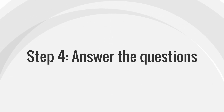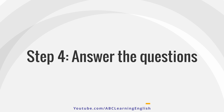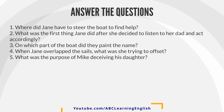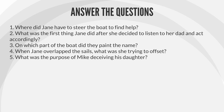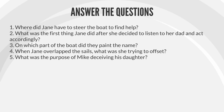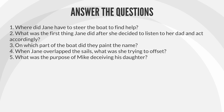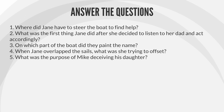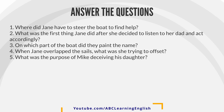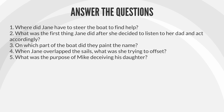Step 4: Answer the questions. 1. Where did Jane have to steer the boat to find help? 2. What was the first thing Jane did after she decided to listen to her dad and act accordingly? 3. On which part of the boat did they paint the name? 4. When Jane overlapped the sails, what was she trying to offset? 5. What was the purpose of Mike deceiving his daughter?